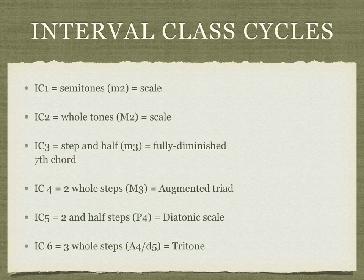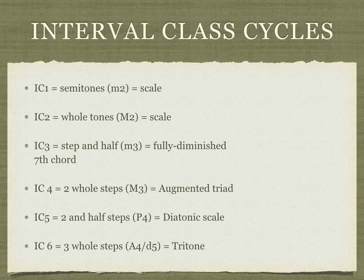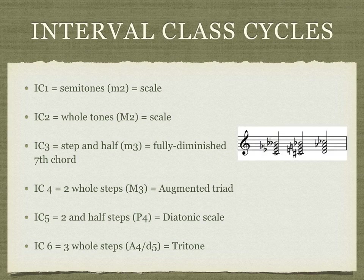What do interval class cycles look like? Interval classes 1 and 2 create scales that you already know and have just seen in the Debussy. Interval class 3 creates a fully diminished 7th chord, which divides the octave evenly — you can think of this as the stack of minor thirds when you construct a fully diminished 7th chord. In fact, there are only three fully diminished 7th chords that can be constructed using the interval class 3 cycle; they could have different roots or different spellings, but would be enharmonically the same. This will be important for constructing a symmetrical scale later on.